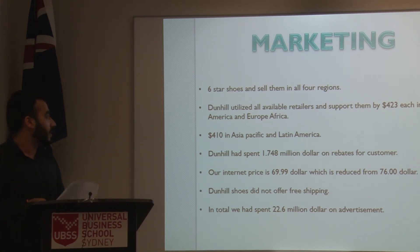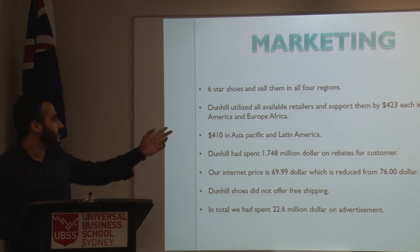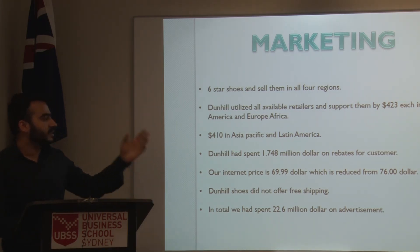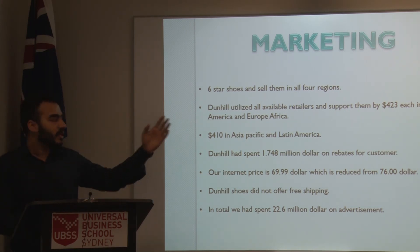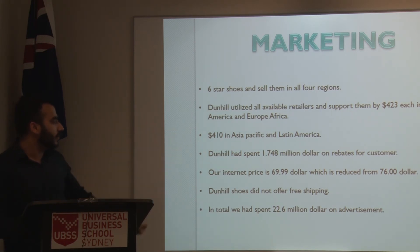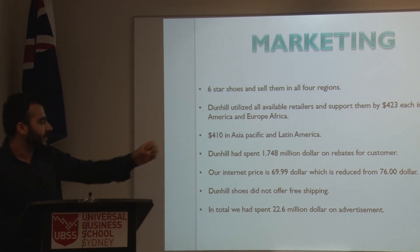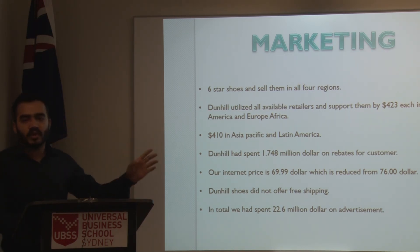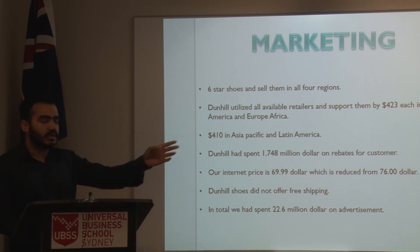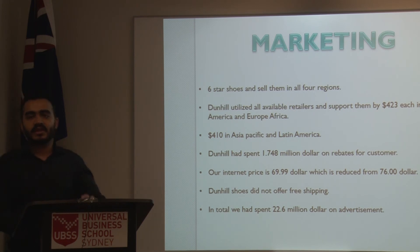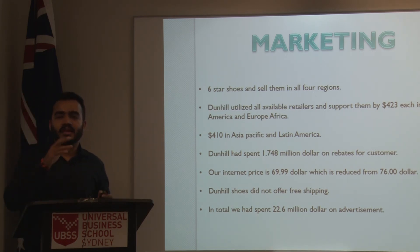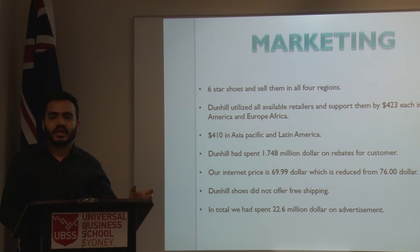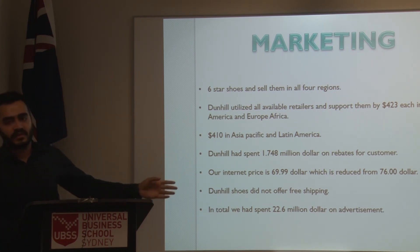In marketing, as we are producing six-star shoes and selling them in four regions, we have utilized our retailers and are supporting them with $423 in North America and Europe, and $410 in Asia Pacific and Latin America. We have spent $1.7 million on rebates for customers. There was a big change in year 13 — we reduced our internet price because in year 12 we couldn't compete as other competitors were selling lower-rate shoes in the market. So we reduced from $76 to $69.99.